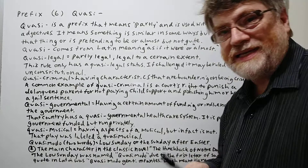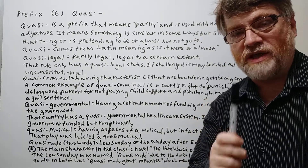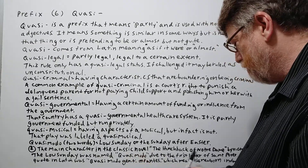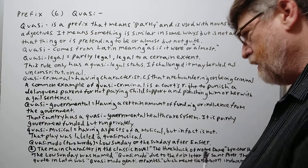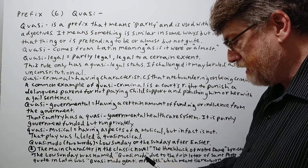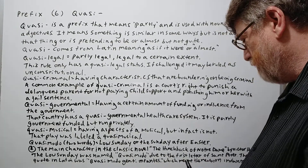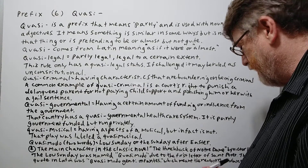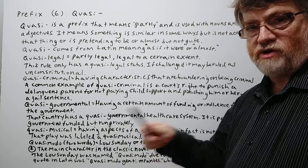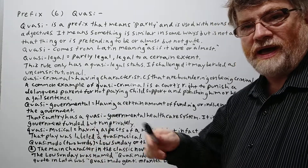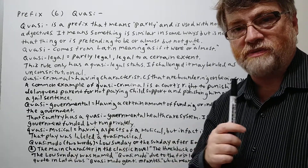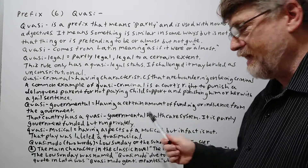Everybody remembers that big hunchback — his name was Quasimodo, even though that was a single word. Low Sunday was named Quasimodo due to a letter of St. Peter. The Latin quote was 'Quasimodo Geniti Infantantes,' meaning 'the newborn infants.' The idea is that when you get baptized and become a Christian, you're like a newborn infant who has to learn, develop, and grow — and that's where we got the name for that Sunday.